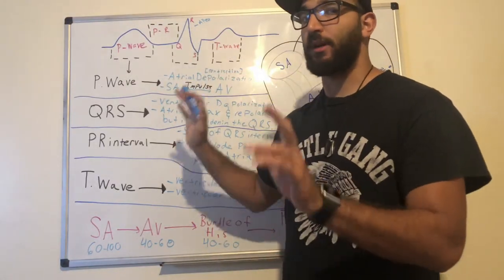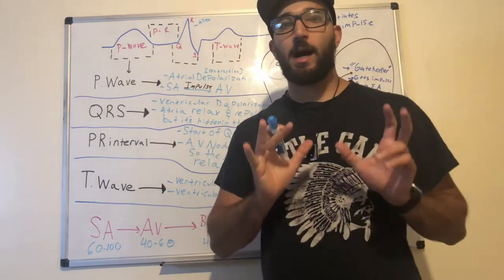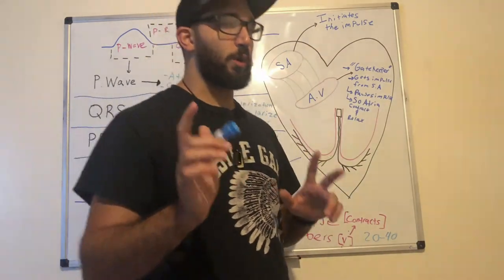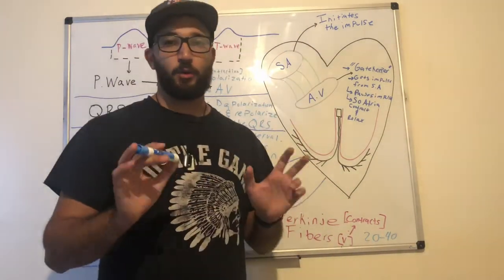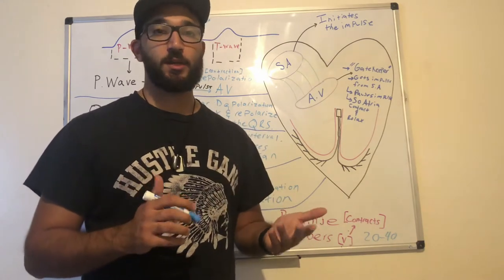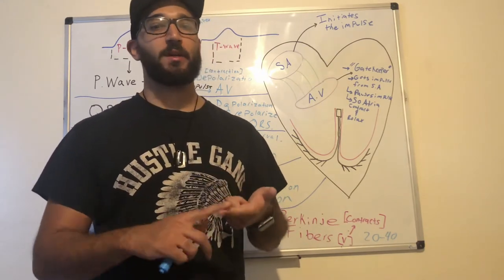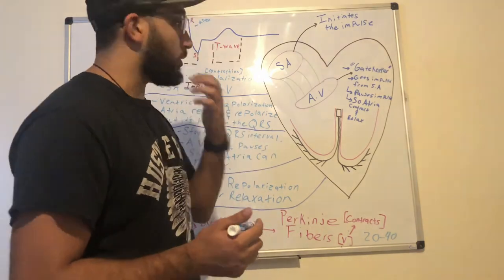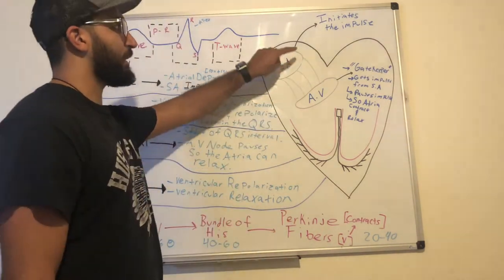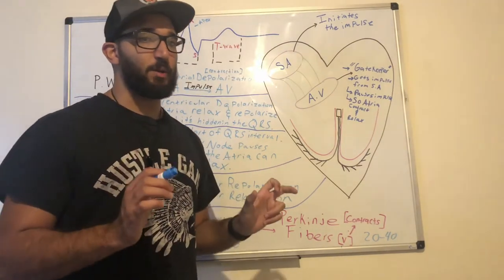Before we get into the actual EKG segment, I think it's extremely important to understand how an impulse is sent. The heart is the one organ in the body that has an electrical system, and what that electrical system does is help with contraction of the ventricles and relaxation of the atria. The impulse begins at the SA node — the SA node is what actually initiates the impulse.